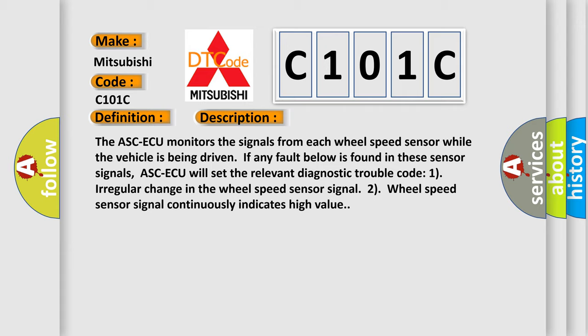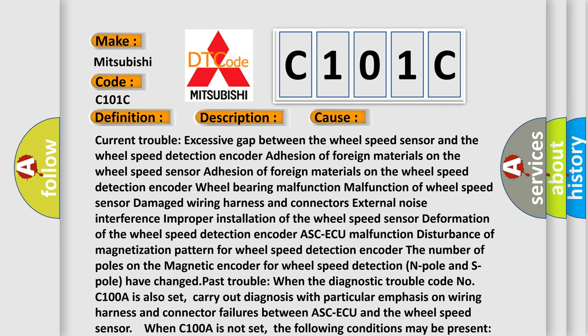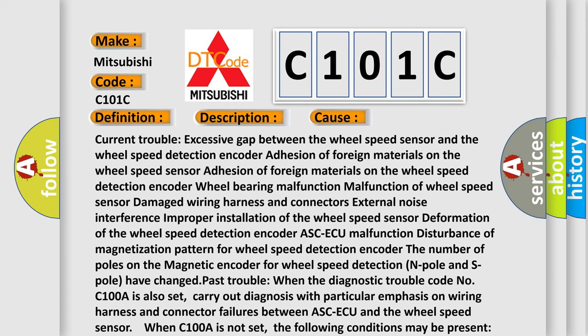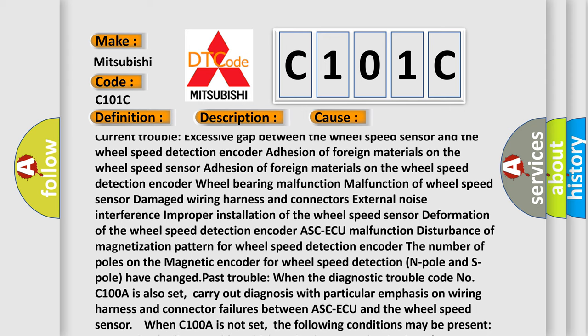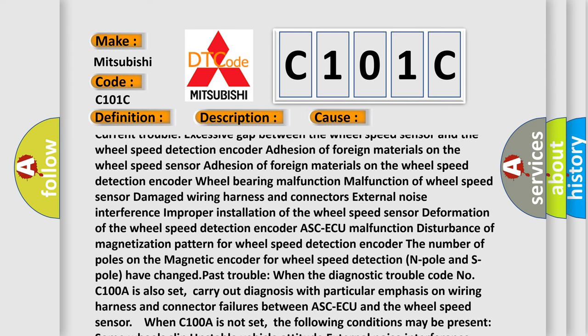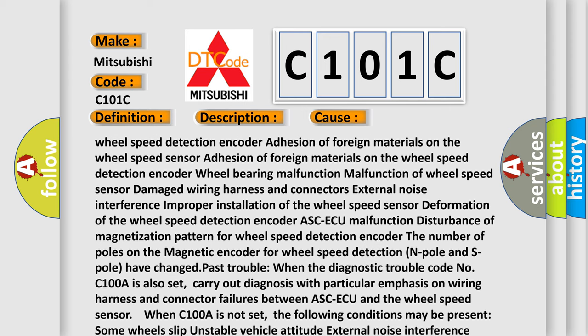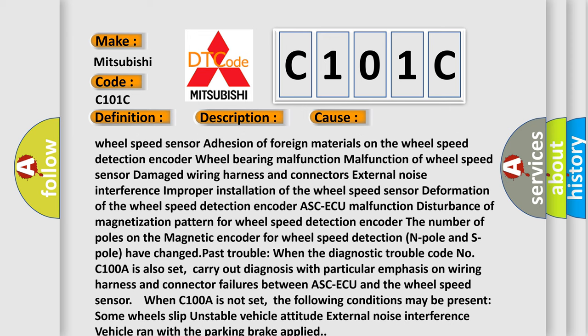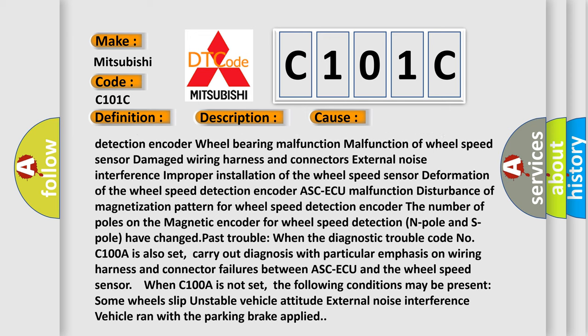This diagnostic error occurs most often in these cases: Current trouble - Excessive gap between the wheel speed sensor and the wheel speed detection encoder, adhesion of foreign materials on the wheel speed sensor, adhesion of foreign materials on the wheel speed detection encoder, wheel bearing malfunction, malfunction of wheel speed sensor, damaged wiring harness and connectors, external noise interference, improper installation of the wheel speed sensor, deformation of the wheel speed detection encoder, ASC-ECU malfunction.